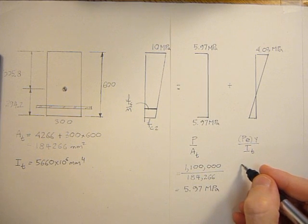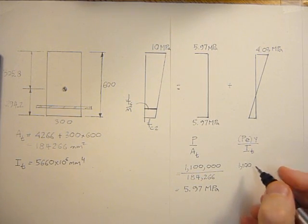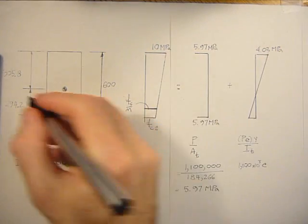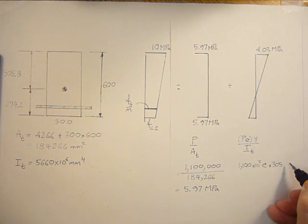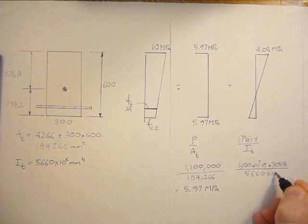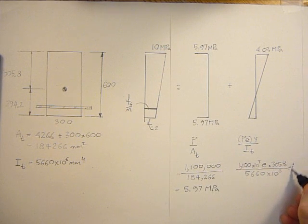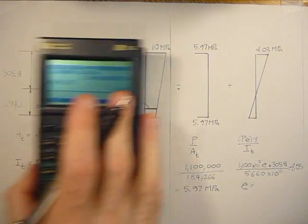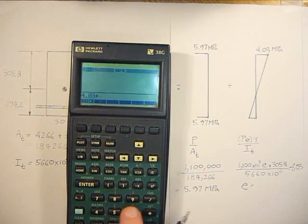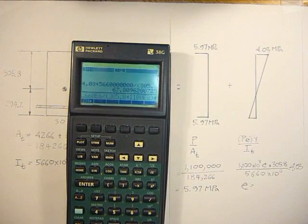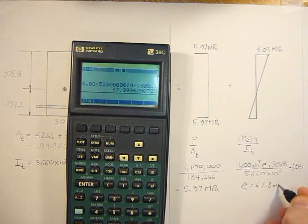So the P we know is 1100 kilonewtons times 10 to the third. And then E is an unknown. Y, we know this distance here, 305.8. And then we divide by the transformed inertia. And that will have to equal 4.03 MPa. Now we can solve for E. We just take 4.03, we rearrange it, times 5660 E to the sixth, divided by the 305.8 times the 1100 kilonewtons, 1100 E to the third brings the newtons. And E equals 67.8 millimeters.